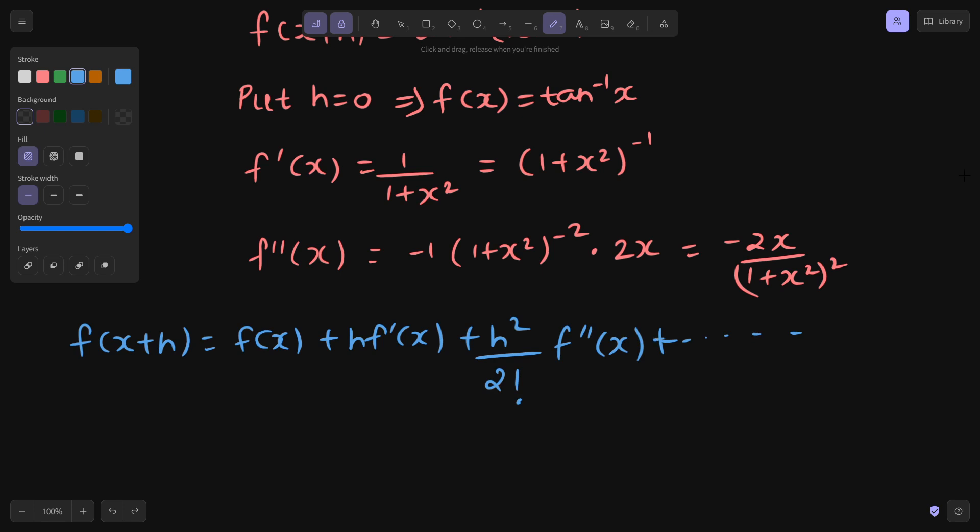F of x plus h here is tan inverse of x plus h. So that can be written as f(x) is tan inverse x plus h times the first derivative which came out to be 1 upon 1 plus x square, plus h square upon 2 factorial. And what came out to be the second derivative? Second derivative came out to be negative 2x by 1 plus x square power 2.